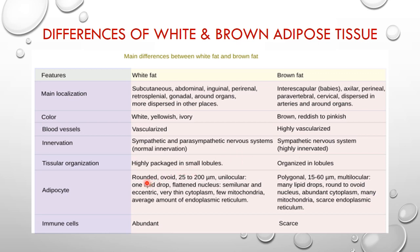The adipocytes of white adipose tissue are rounded or ovoid and have a diameter of 25 to 200 micrometers. They are unilocular with a single lipid droplet, a flattened, semilunar, eccentric nucleus, very thin cytoplasm, few mitochondria, and an average amount of endoplasmic reticulum and organelles. Brown adipose tissue adipocytes are polygonal in shape with a diameter of 15 to 60 micrometers, multilocular with many lipid droplets, a round to ovoid central nucleus, abundant cytoplasm, many mitochondria, and scarce endoplasmic reticulum. Immune cells are abundant in white fat whereas they are scarce in brown fat.